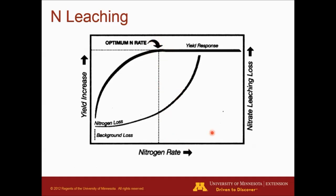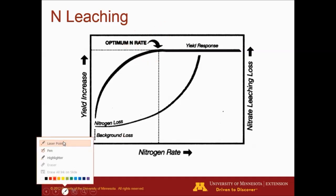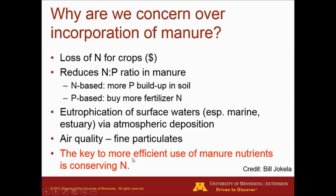That nitrogen leaching is going to increase dramatically if we increase the nitrogen rates beyond the optimum application rates. That's why the University of Minnesota provides growers with guidelines about what is the optimal nitrogen rate for a specific crop. Another concern that we have with manures is ammonia volatilization. If we surface apply manure and we don't incorporate it, a lot of that ammonium is going to be lost in the form of ammonia volatilization.